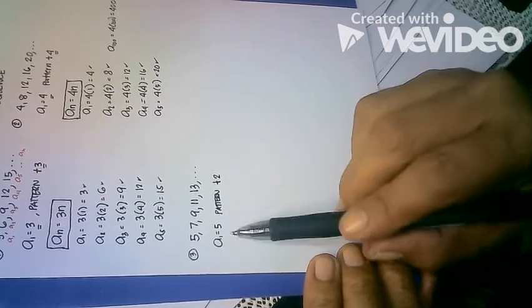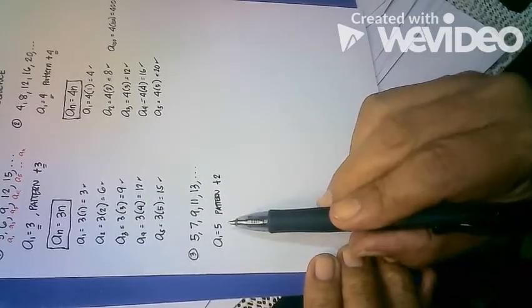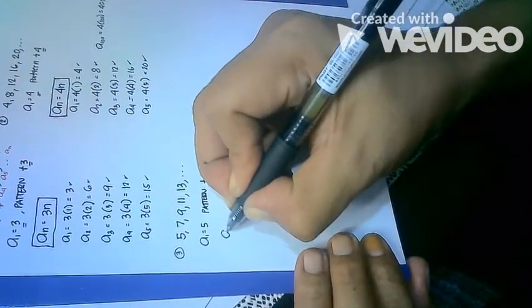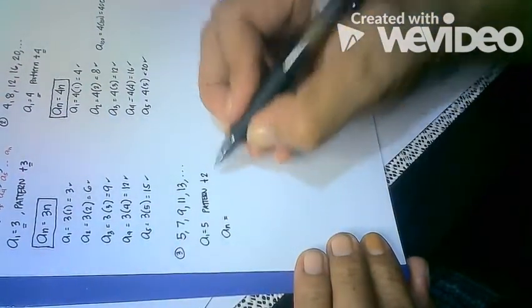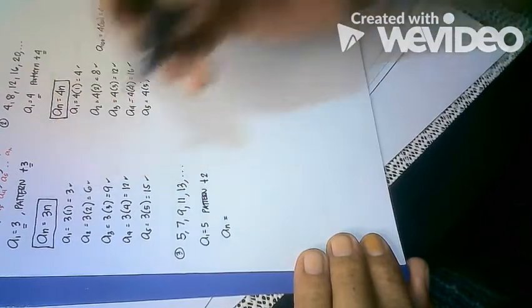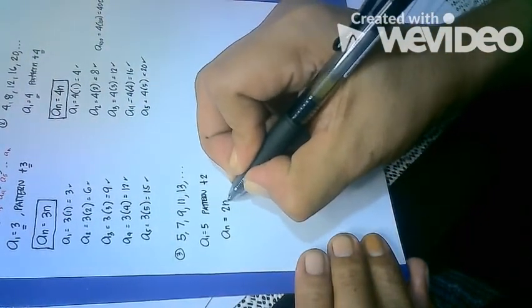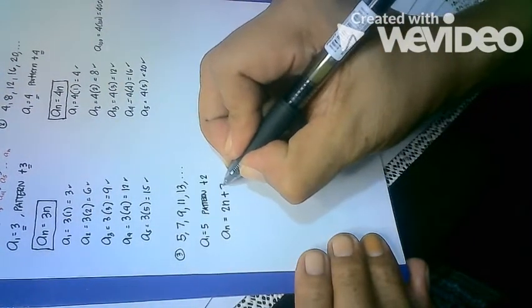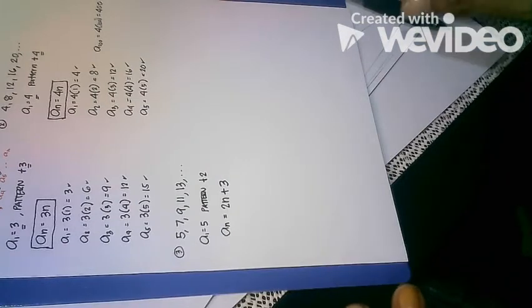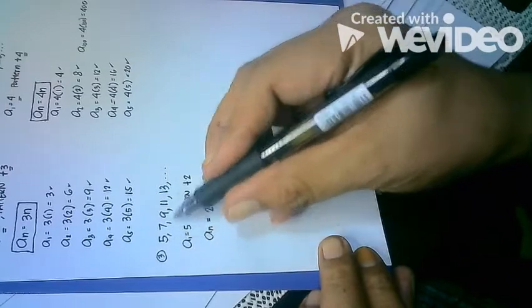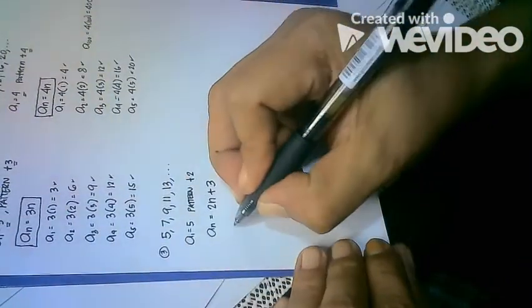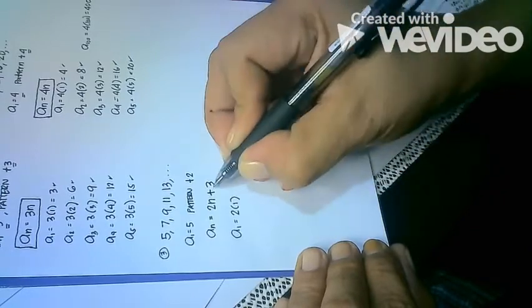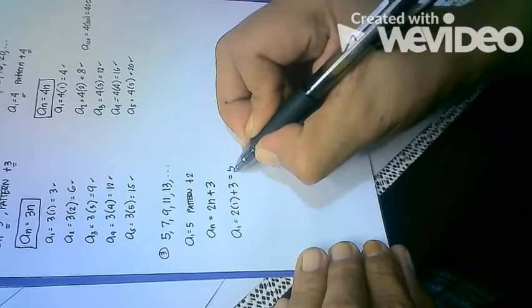Two and five are different — the pattern is less than the first term. So your a sub n uses the pattern as the coefficient of n: a_n = 2n. Then we add the difference because the first term is greater, so plus 3 — giving a_n = 2n + 3. Let's check: a sub 1 equals 2 times 1 plus 3, which equals 5 — check.